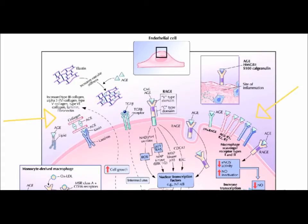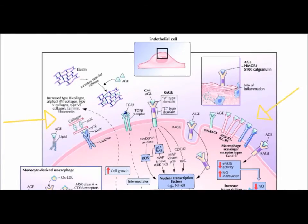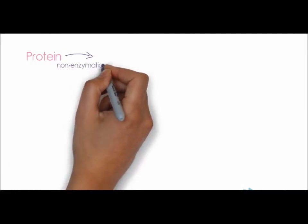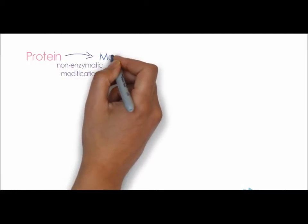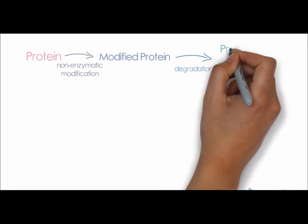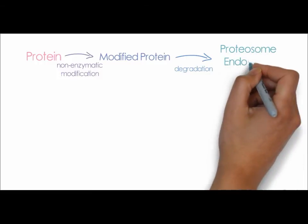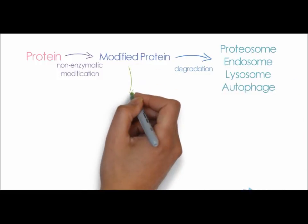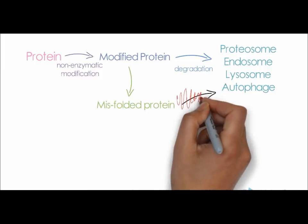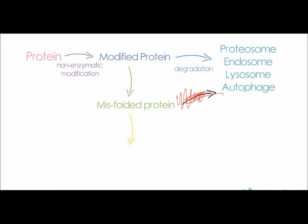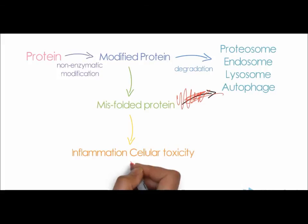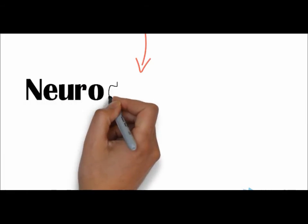Proteins undergo non-enzymatic modifications such as oxidation, carbamylation, and glycation to become modified proteins. Such proteins are normally targeted for degradation by the proteasome, endosome, lysosome, or autophagy. However, some misfolded proteins are able to evade these defense mechanisms and are not destroyed. These misfolded proteins accumulate, and in high concentration cause inflammation as well as cellular toxicity.